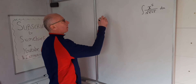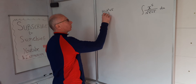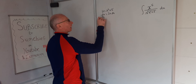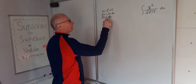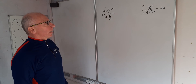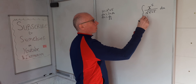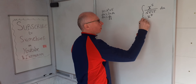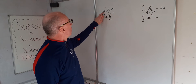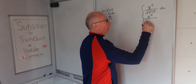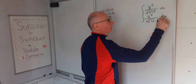Let's start with u equals x squared plus 5 and see where that takes us. So u equals x squared plus 5, du equals 2x dx, so dx equals du over 2x. Substituting in: we've got x to the 5 over the square root of x squared plus 5 — that's the square root of u — and then dx is du over 2x.